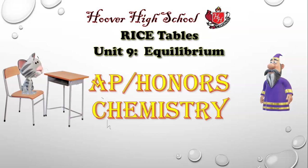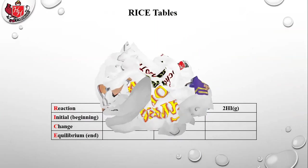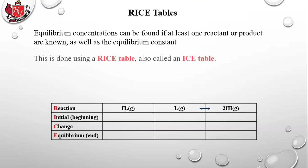Chemistry. We're on to our second lesson in the equilibrium unit, and this is on RICE tables, also called ICE tables. Equilibrium concentrations can be found if at least one reactant or product is known, as well as an equilibrium constant. This is done using a RICE table.